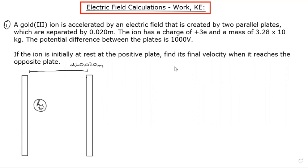The ion has a charge of plus three electrons and a mass of 3.28 times 10 to the negative 25 kilograms. The potential difference between the plates is a thousand volts.